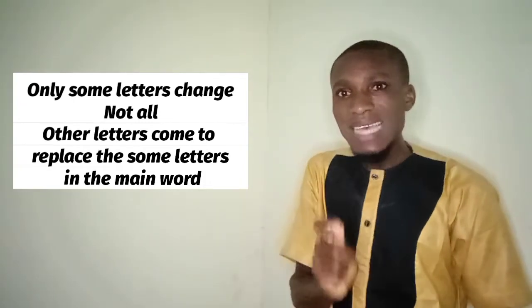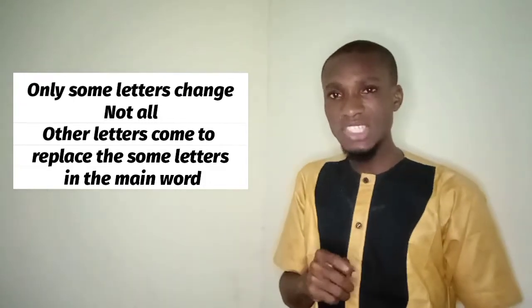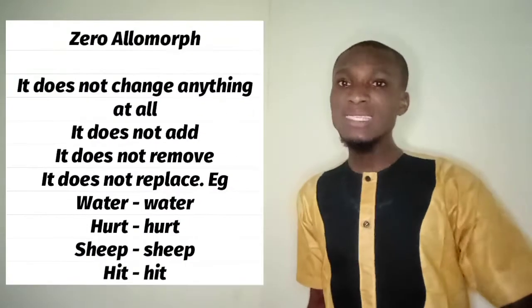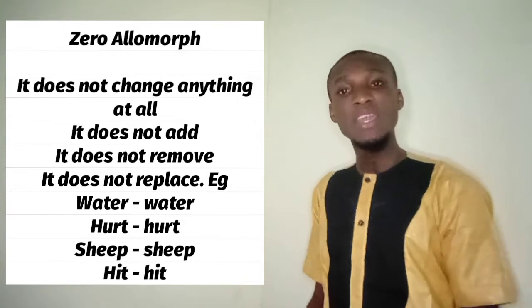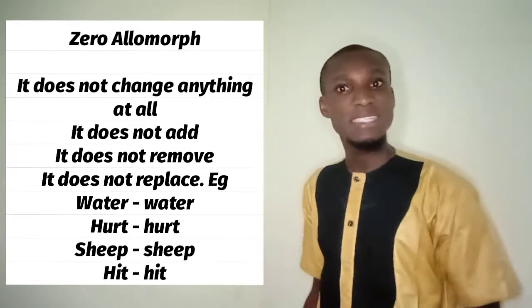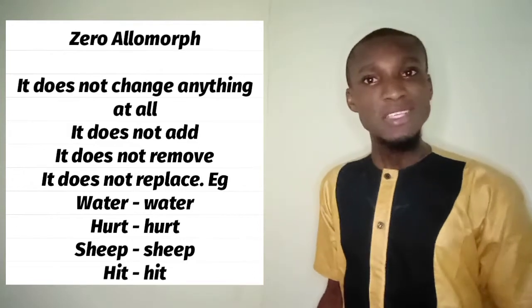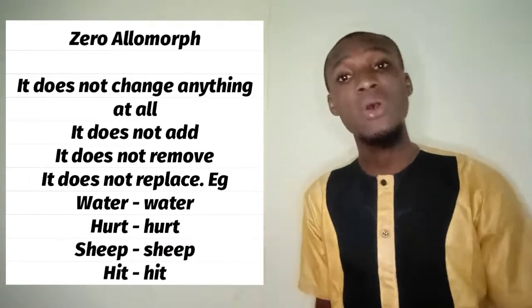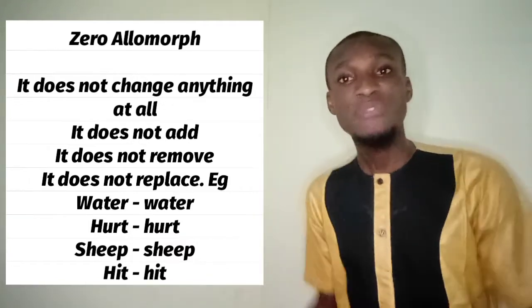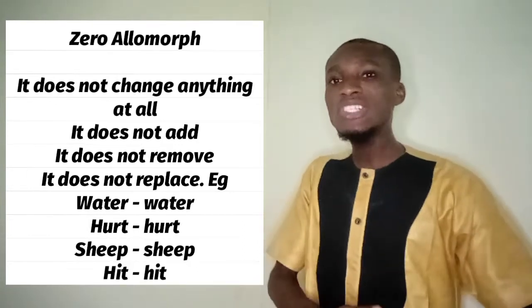But when it comes to zero allomorph, zero allomorph does not change anything at all. It does not add anything, it does not remove anything — it remains the same way it has been. For example, the plural of 'water' is 'water', the plural of 'sheep' is 'sheep'. The past tense of 'hit' is 'hit' — H-I-T. The past tense of 'fish' is 'fish'. You don't add anything, you don't change anything. That is zero allomorph.